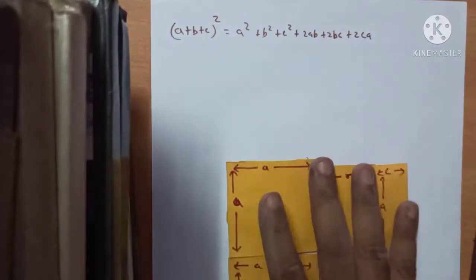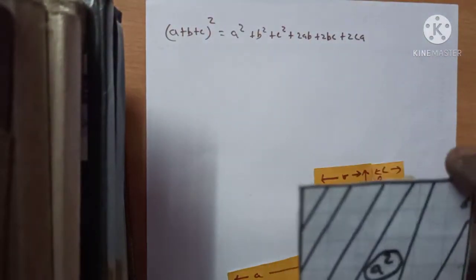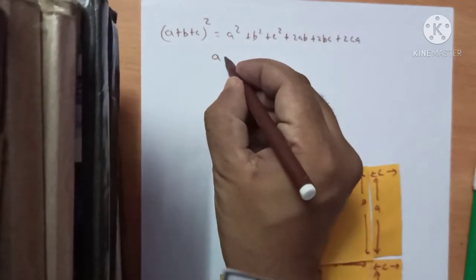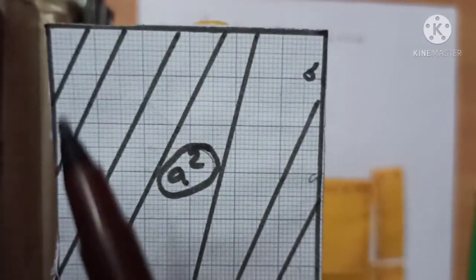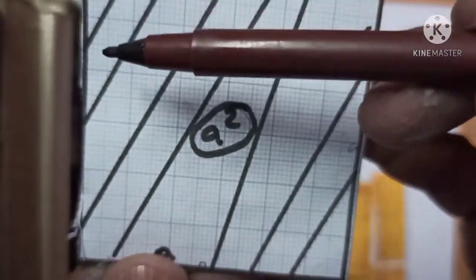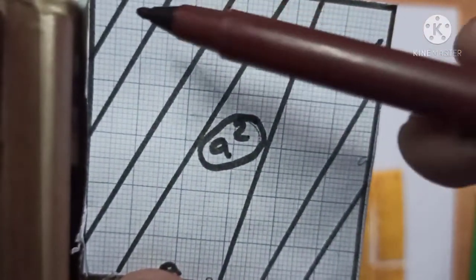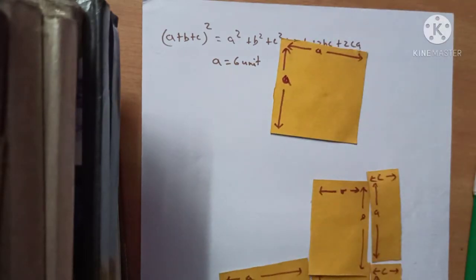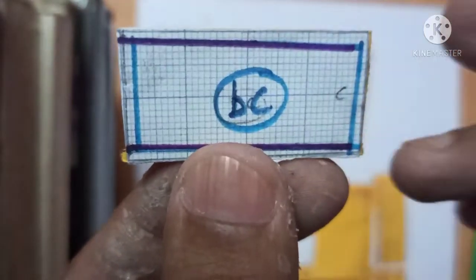For that, I have taken a graph paper. On that graph paper, I have taken 6 units in length — 1, 2, 3, 4, 5, 6. I have taken the value of a equal to 6 units. Vertically also, it is 1, 2, 3, 4, 5, 6 units. So 6 into 6 — the area of this will be a into a. The length is a and the breadth is also a, that is a into a, which is 6 into 6 = 36 square units.